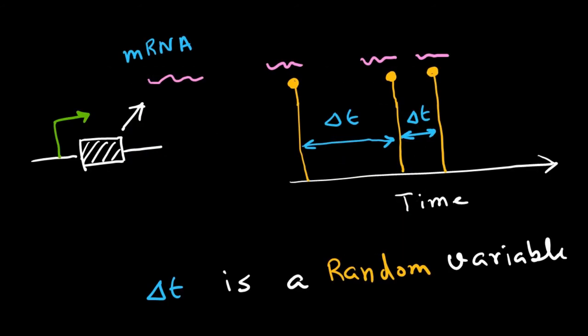So suppose we induce a gene expression in E. coli by adding IPTG in the media. Now we count the number of copies of mRNA produced in a single E. coli cell—mind it, in a single E. coli cell. Just now, one copy of mRNA is produced.